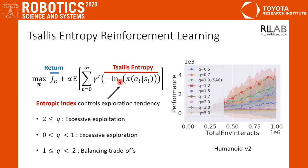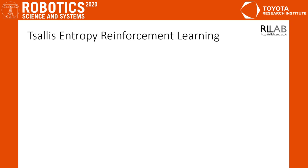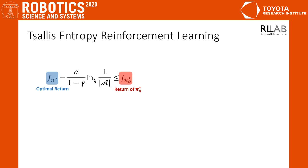While we empirically show that there exists some good range of the entropy index, however, finding the best q value requires additional computational cost. So, we propose a scheduling method which does not require exhaustive search on the entropy index. The idea is developed based on a performance lower bound. J_π* is the optimal return of the original reinforcement learning without regularization. J_π_q* is the return of an optimal solution of Tsallis entropy reinforcement learning.